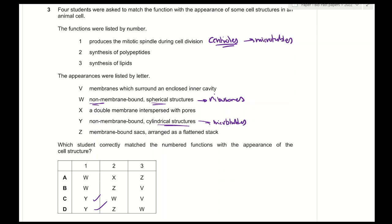Function 2 is synthesis of polypeptides. As we know, polypeptides are synthesized on ribosomes on the rough endoplasmic reticulum. Looking at the options, W — non-membrane-bound spherical structures — are ribosomes. Z — membrane-bound structures arranged as a flattened stack — is the Golgi body. Therefore, W is correct for function 2.